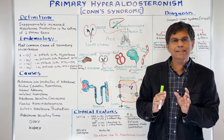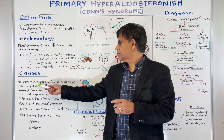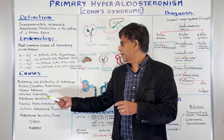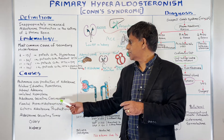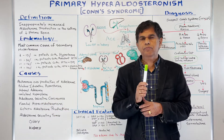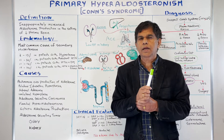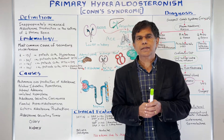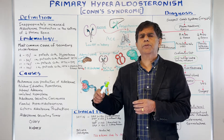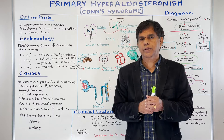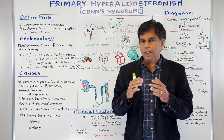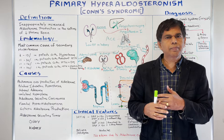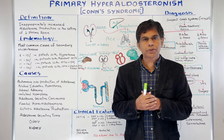Now let's look at the causes and etiology. There is autonomous overproduction of aldosterone, including bilateral idiopathic hyperplasia, adrenal adenoma, unilateral hyperplasia, aldosterone-secreting carcinoma, and familial hyperaldosteronism. There is a lot of literature emerging on somatic mutations in the mineralocorticoid receptor where aldosterone works. If your grandparents or parents have resistant hypertension, think about primary hyperaldosteronism.